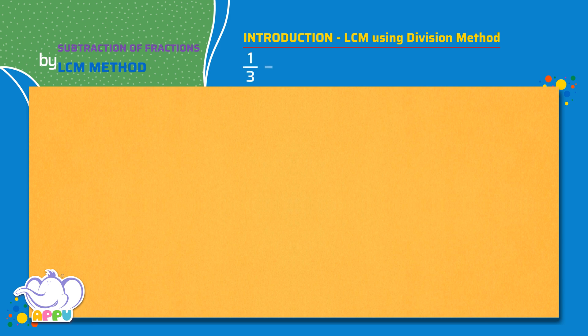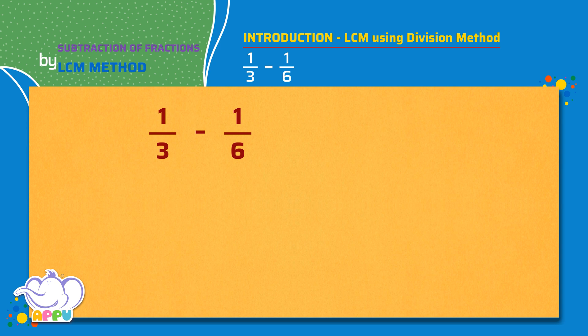1 by 3 minus 1 by 6. We see that the denominators are not the same for both the fractions.